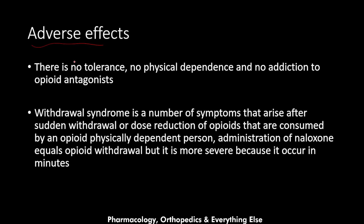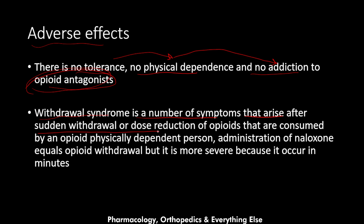Regarding adverse effects, there is no tolerance, no physical dependence, and no addiction associated with opioid antagonists like naloxone — these issues apply to all opioids except the antagonists. The main adverse effect of naloxone is withdrawal syndrome: a set of symptoms arising after sudden withdrawal or dose reduction of opioids in a physically dependent person. Administration of naloxone essentially equals opioid withdrawal, but it is more severe because it occurs within minutes.